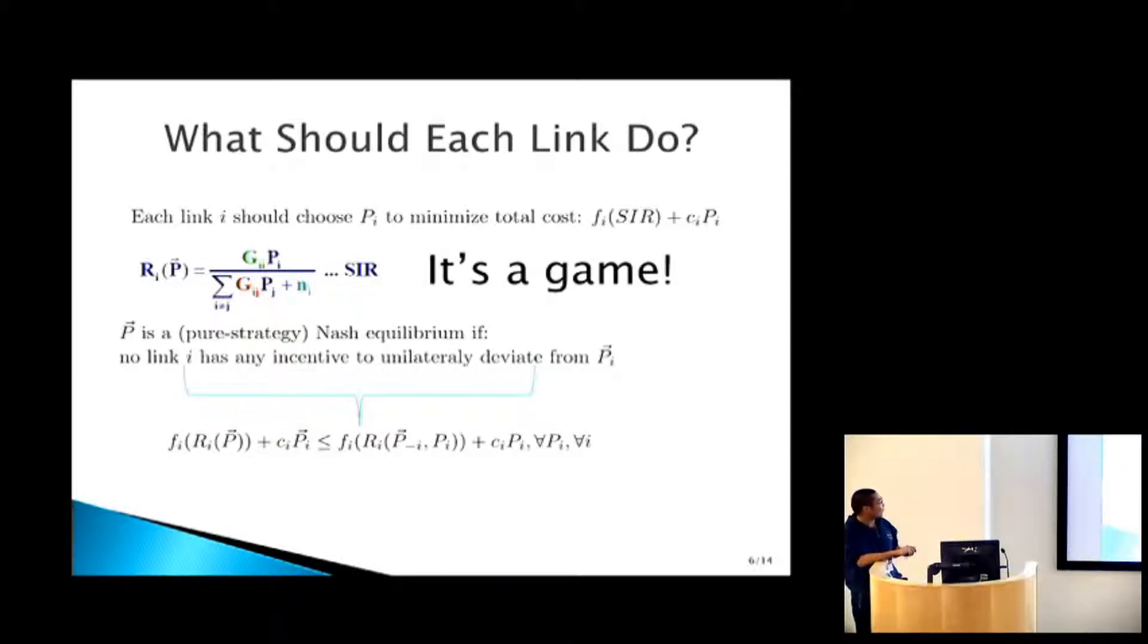Here, we're talking about pure strategy Nash equilibrium. That means power vector P is a pure strategy Nash equilibrium if no link has any incentive to unilaterally deviate from that power. Written in math, it just means if that person unilaterally deviates, it's going to get a larger loss. Applying game theory to wireless communication is not something new. People have been doing that for at least more than a decade. Professor Bashar has a giant book on applying game theory to wireless communication.